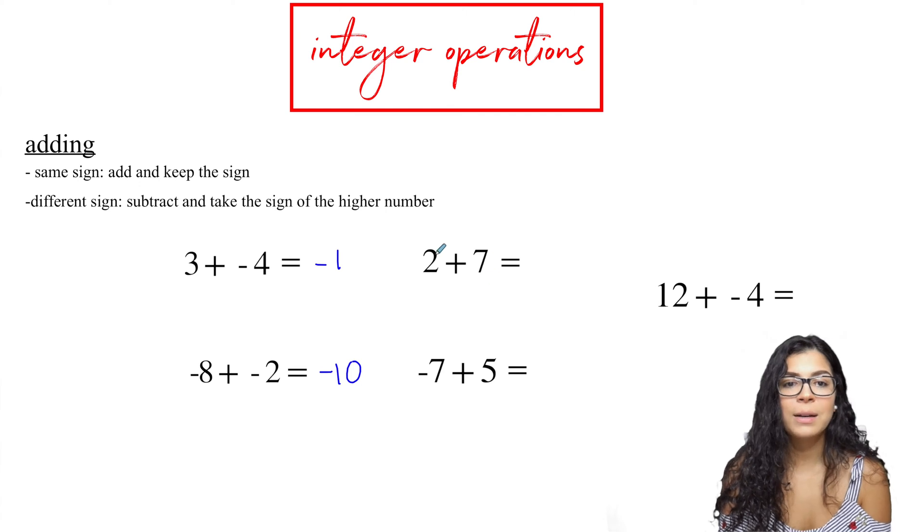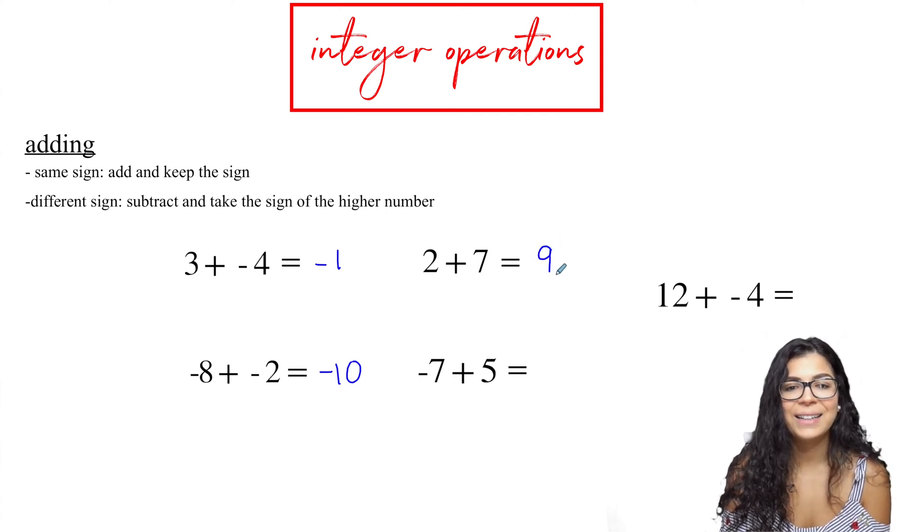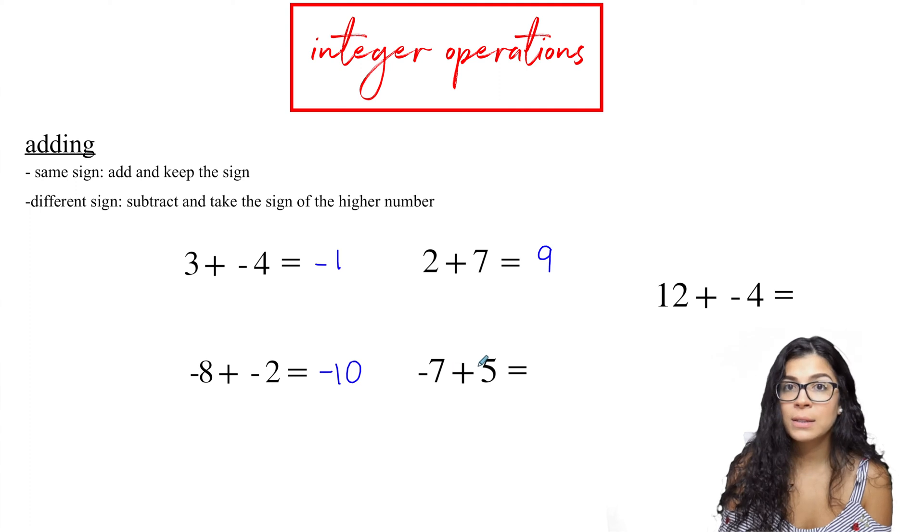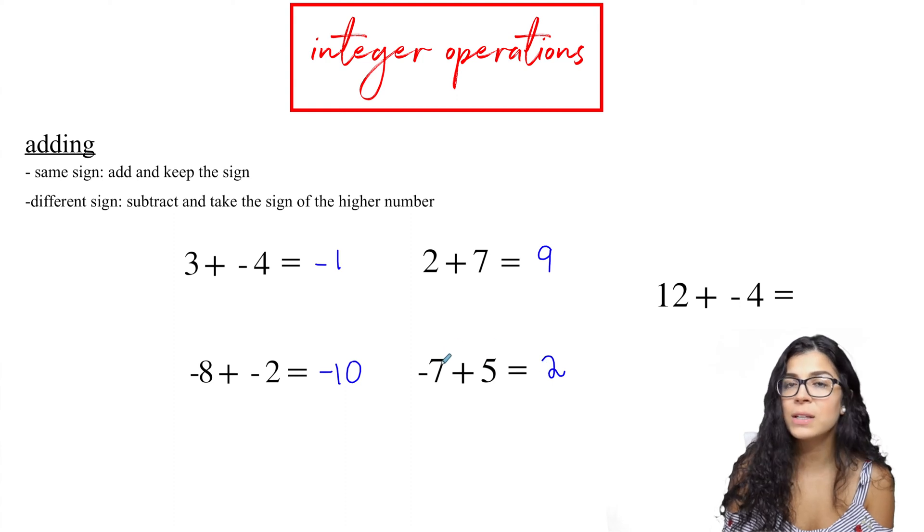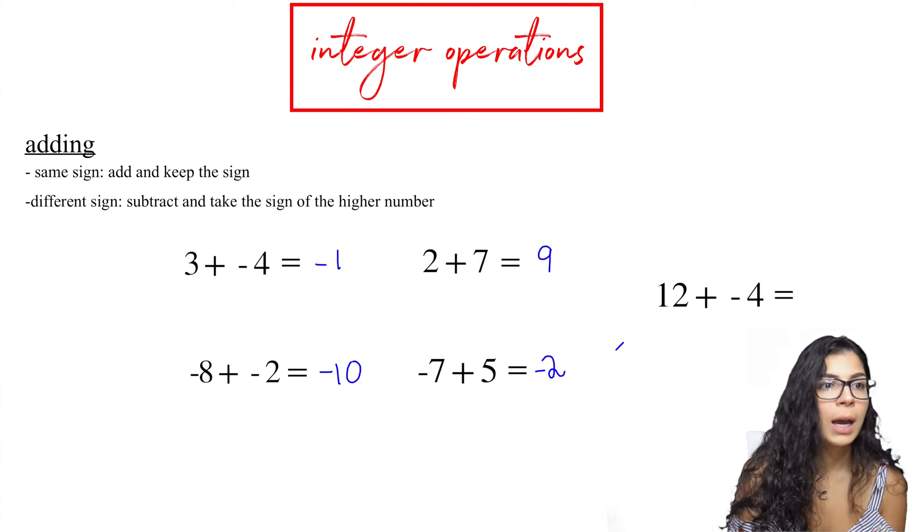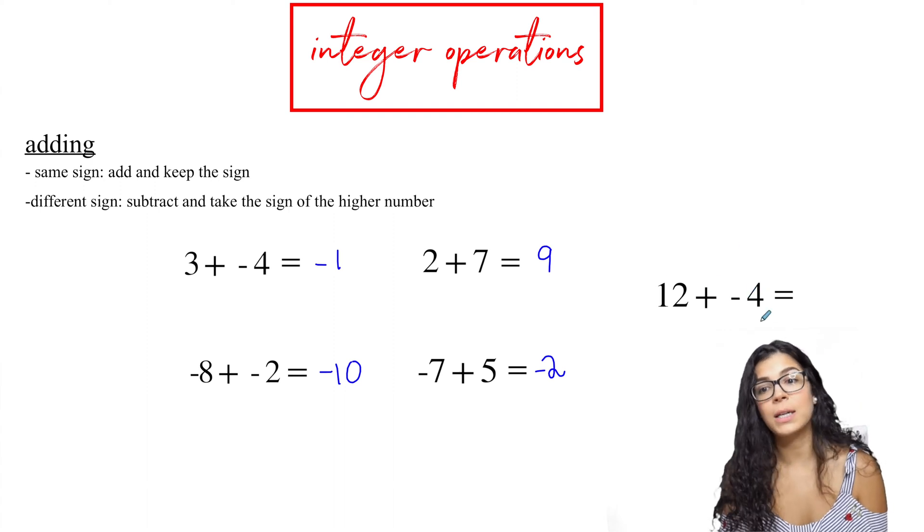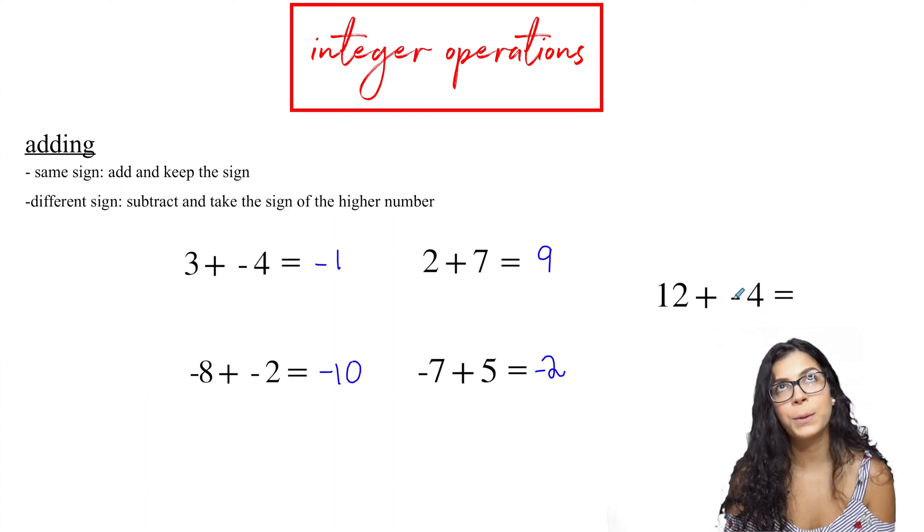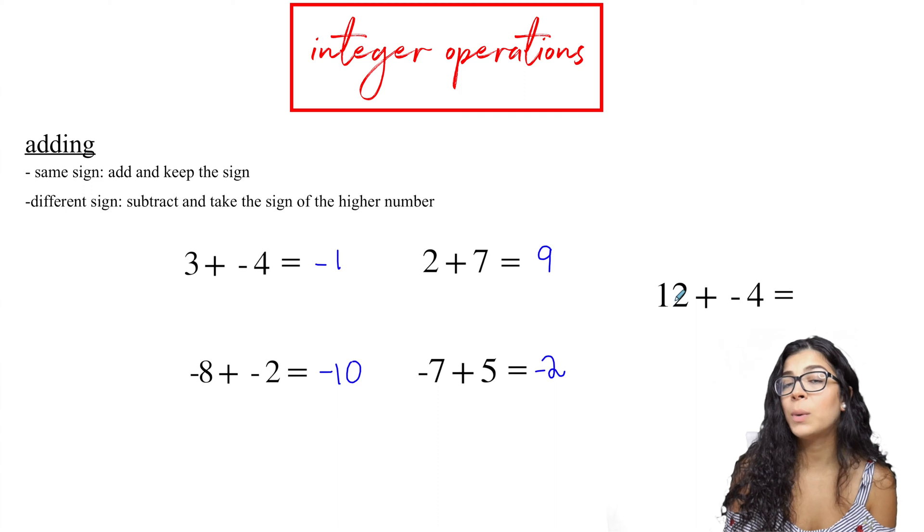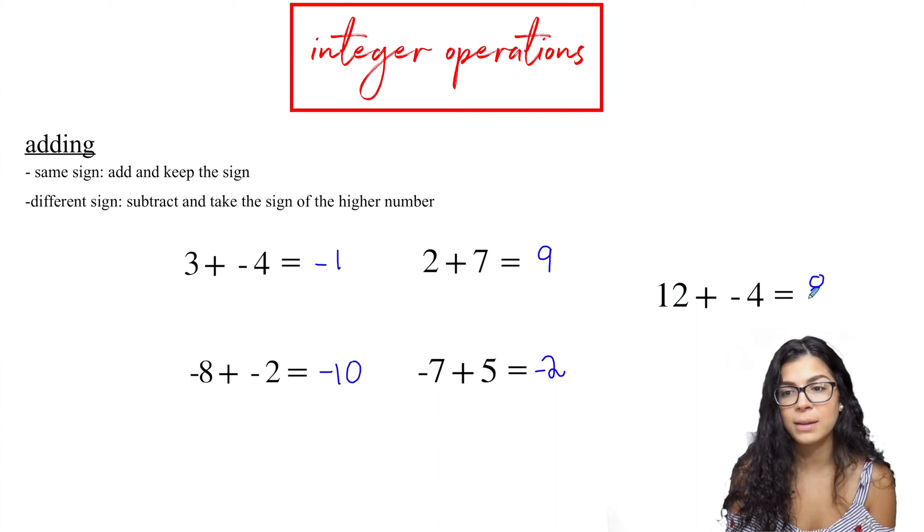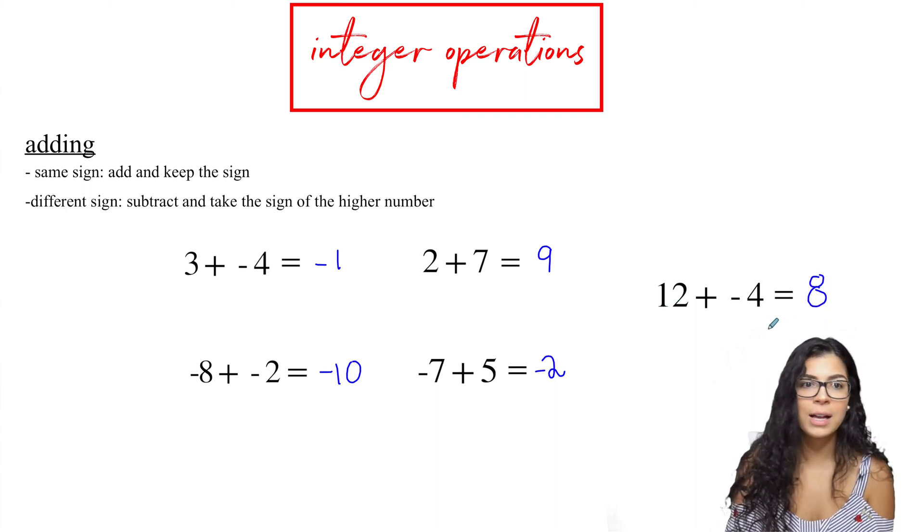Alright, next up, two plus seven. Piece of cake. Nine. Alright, different signs here. So I'm going to subtract seven and five. I get two. And let's see, seven is bigger. This seven is negative, so my result will be negative. Then over here we have a positive and a negative. Different signs, so subtract. Twelve minus four, I get eight. And the twelve is bigger and the twelve is positive, so this will be a positive eight. Awesome!